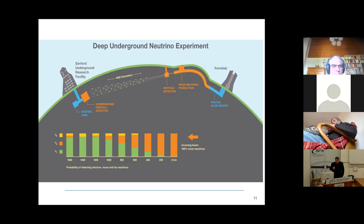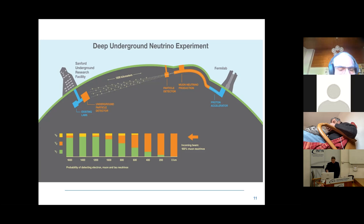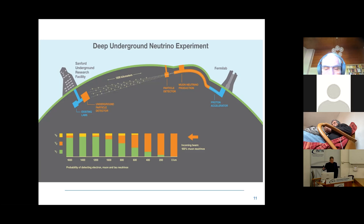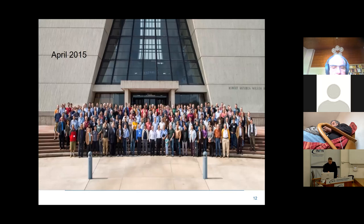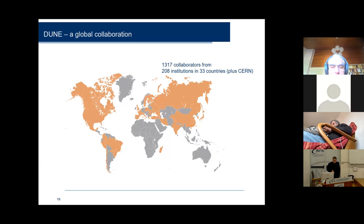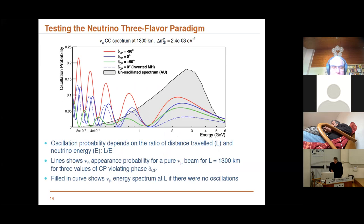For the first time, it was done under the so-called central center model: the host laboratory owns the infrastructure, whereas the governance of the experiment belongs to the international collaboration, in which of course US groups participate. When funded, it has grown to nearly 1,500 people from 33 countries plus CERN. This is one of the key elements of this experiment.